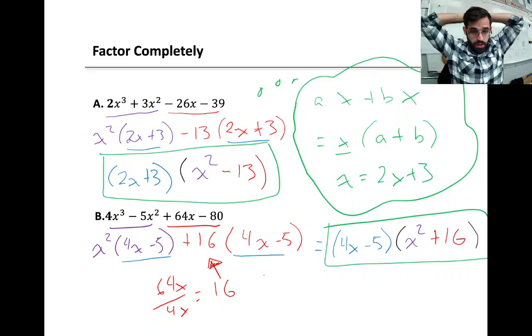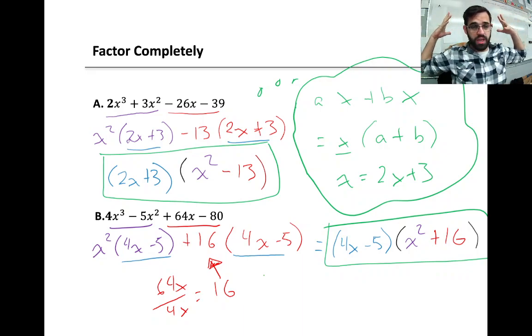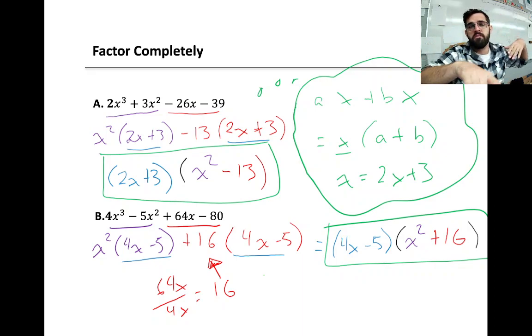Okay, so then, yeah, again, this is a special case. You need 4 terms to do factor by grouping. So, if you see 4 terms, either I'm playing a trick on you by adding 2 like terms in there, or you're going to have to use factor by grouping. So watch out for that.